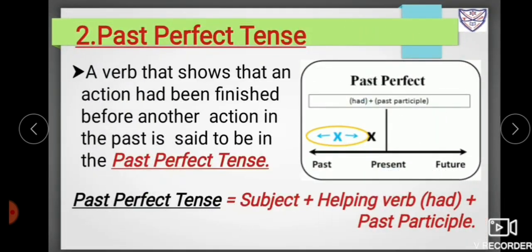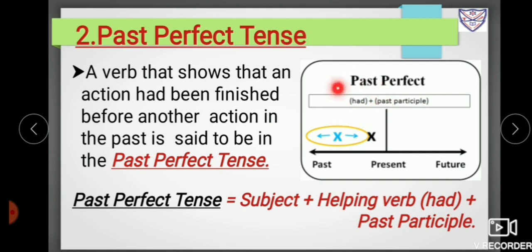The second form of the perfect tenses is past perfect tense. A verb that shows that an action had been finished before another action in the past is said to be in the past perfect tense. Past perfect tense is formed with subject plus the helping verb 'had', followed by the past participle or third form of the verb.